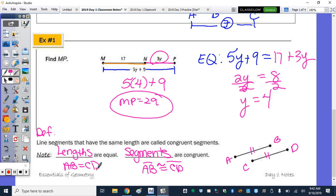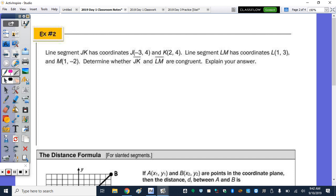Number 2 on the back, this is line segment JK has coordinates J, negative 3, 4, and K, 2, 4. So if you picture that, left 3 up 4, right 2 up 4, is that a horizontal or vertical segment? Horizontal. And then L is right 1 up 3, and M is right 1 down 2, so that's going to be vertical. Determine if they're congruent. Well, by definition, if they're congruent, they must have the same length.